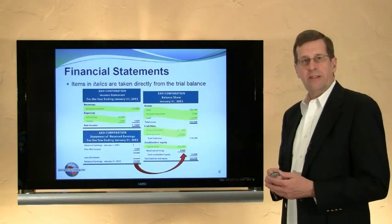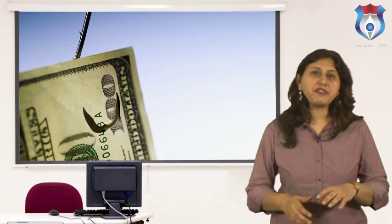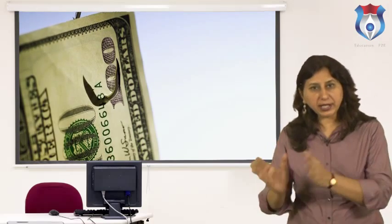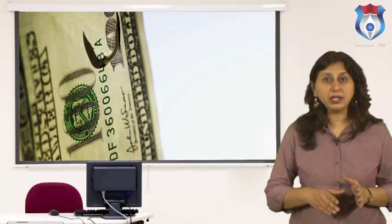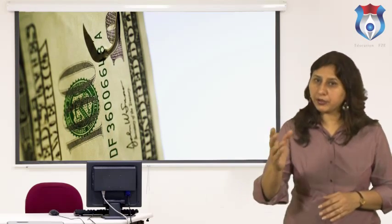The trial balance is primarily a tool to check for the equality of debits and credits prior to the actual preparation of financial statements. After posting transactions in a ledger account and balancing the account, a statement is prepared to show the debit and credit balances separately — this is called a trial balance. The balance of an account is the difference between the totals of the debit side and credit side. If the debit side total is greater, it is called debit balance; if the credit side total is greater, it is called credit balance.